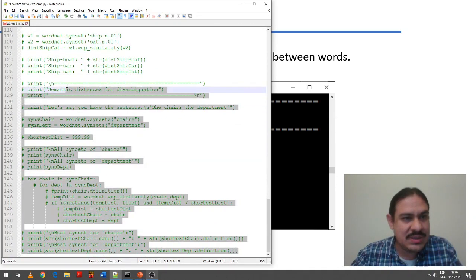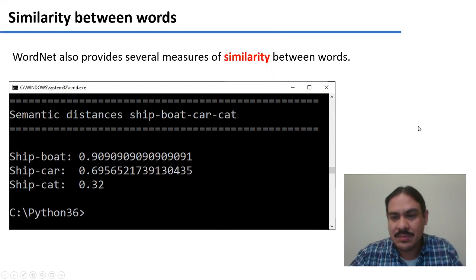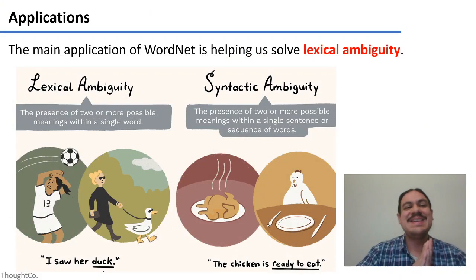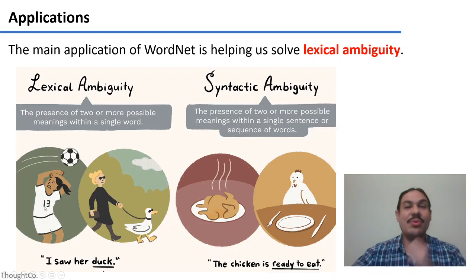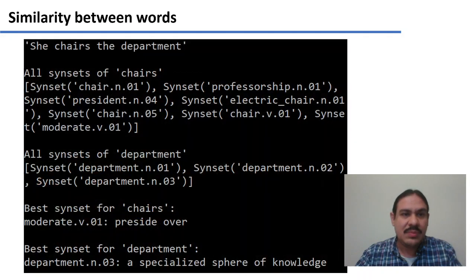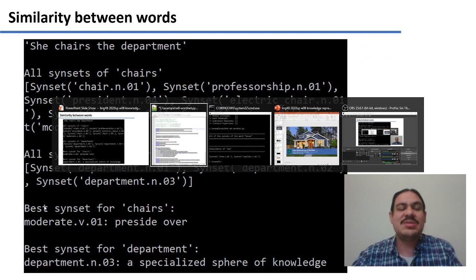Finally, I want to show you something that you can do with WordNet. Why are we doing this? WordNet helps us resolve lexical ambiguity. So we've looked at syntactic ambiguity before, where the chicken is ready to eat, for example. We don't know if the chicken is doing the action or the chicken is suffering the action. And these would be different parsing trees. There's another type of ambiguity called lexical ambiguity, where a word could have two different meanings, such as the animal, duck, or the action, to duck.